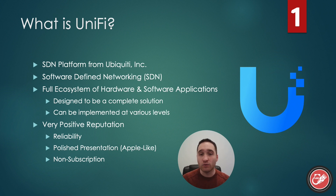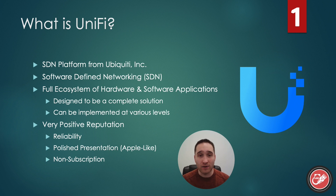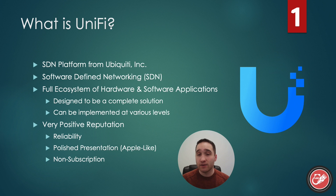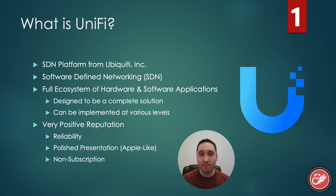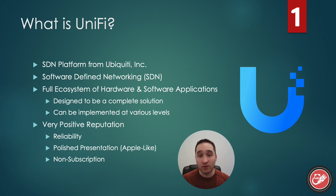You don't have to do this — we'll discuss partial deployments later in the series — but that's the general gist of the platform. Ubiquiti, makers of UniFi, have a very positive reputation in the industry. Their products tend to be very reliable and polished. They're also very proud of their non-subscription style of doing business, which is great for consumers. They are often compared to Apple when talking about their polished presentations and user experience, which makes sense because the founder of Ubiquiti, Robert Pera, was a former Apple employee. Fun fact: Robert Pera also owns the Memphis Grizzlies.